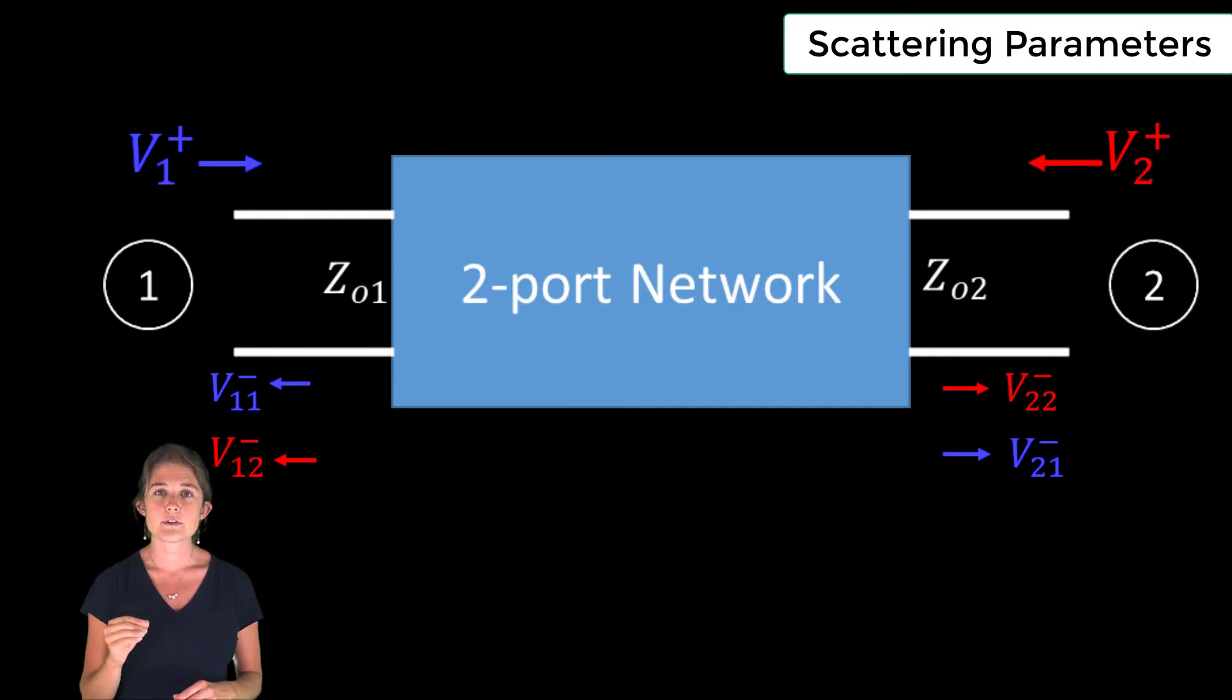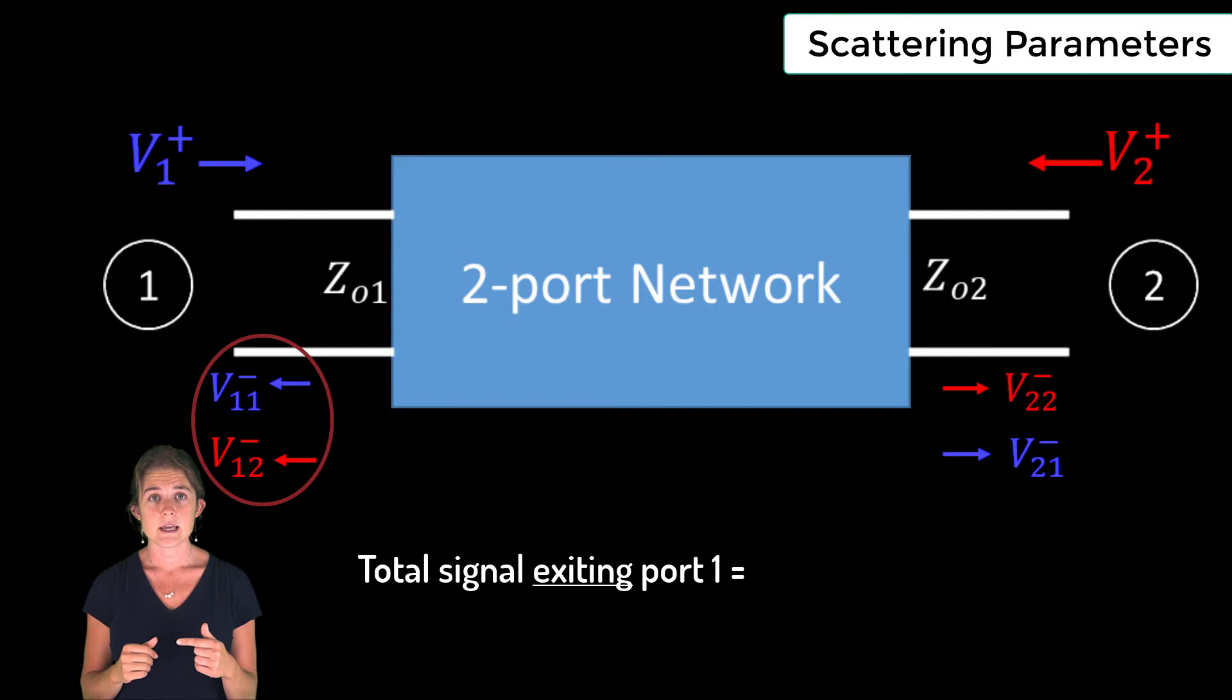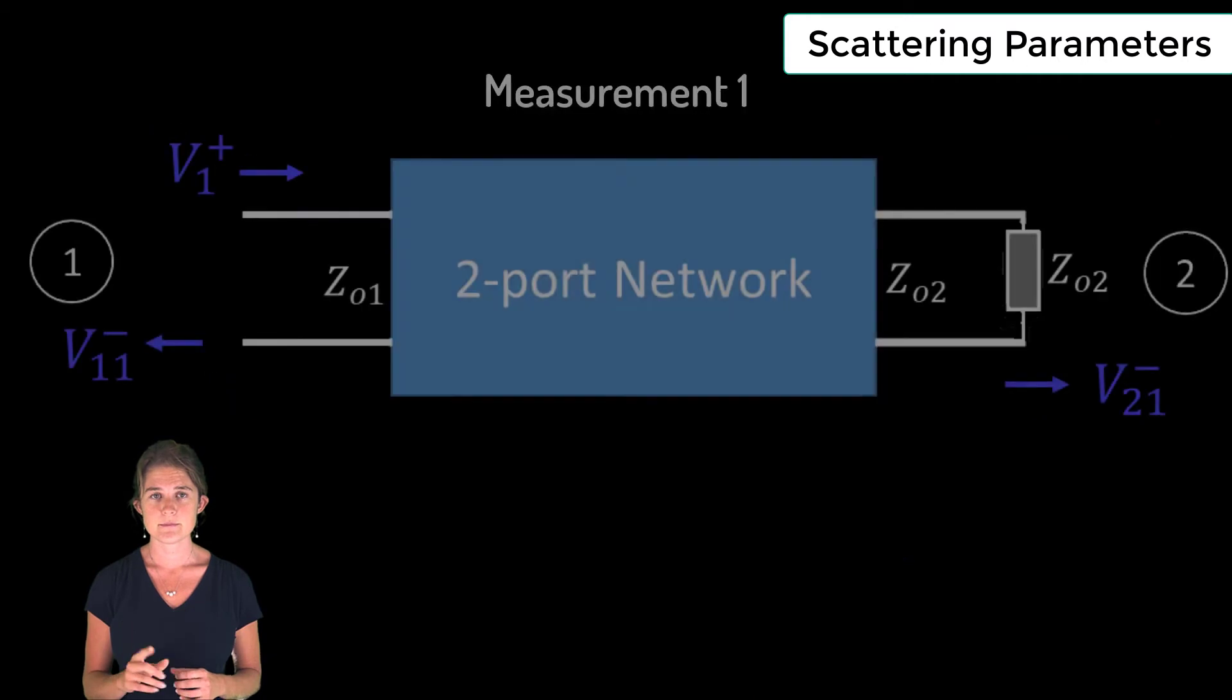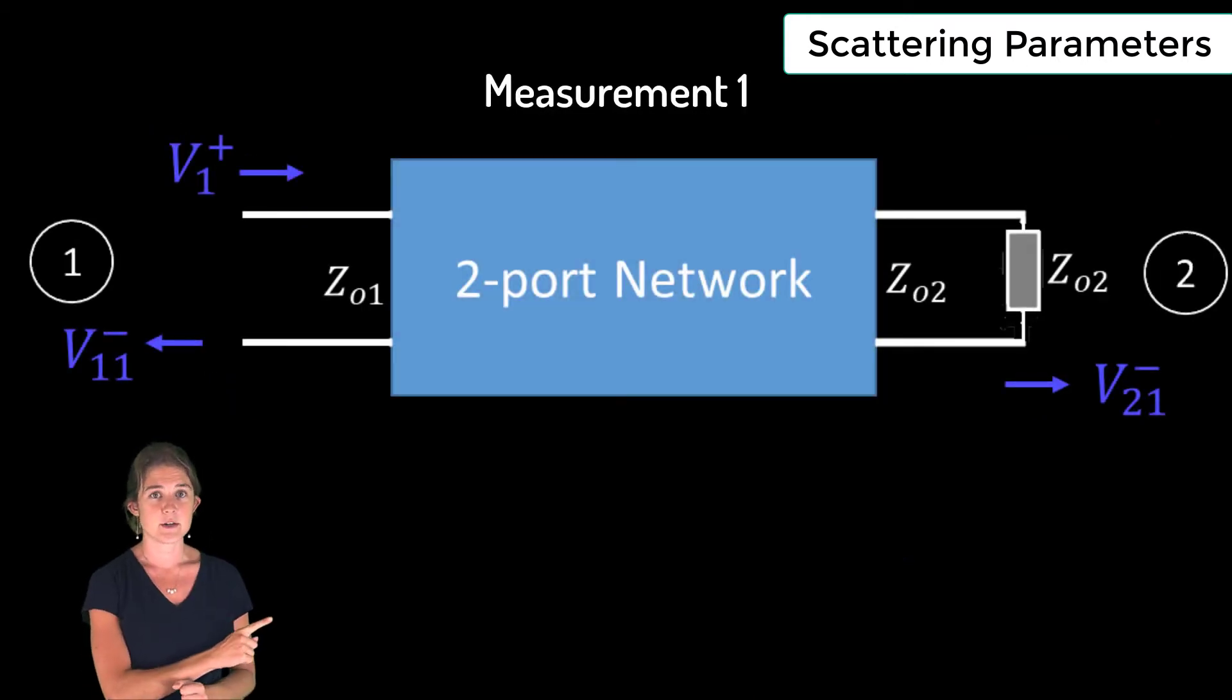So the total signal coming out port one is V12, the portion that was put into port two, was transmitted, and came out port one, plus V11, the portion that was put in port one, reflected, and came back out port one. In order to figure out how much of the outlet signal to attribute to each of these sources, we have to make a series of measurements, each of which involves only a single input signal.